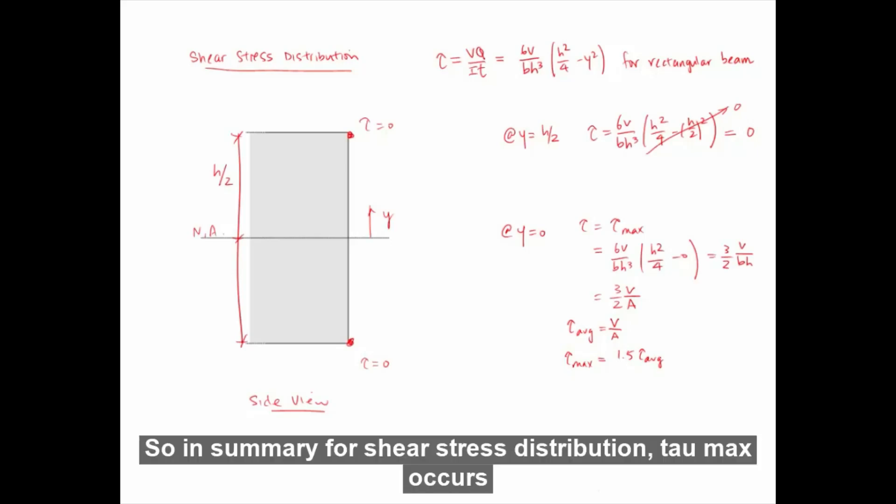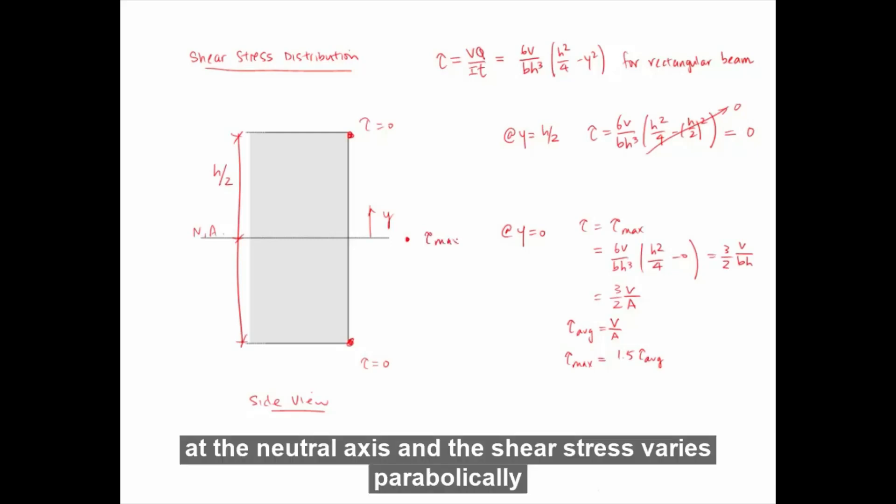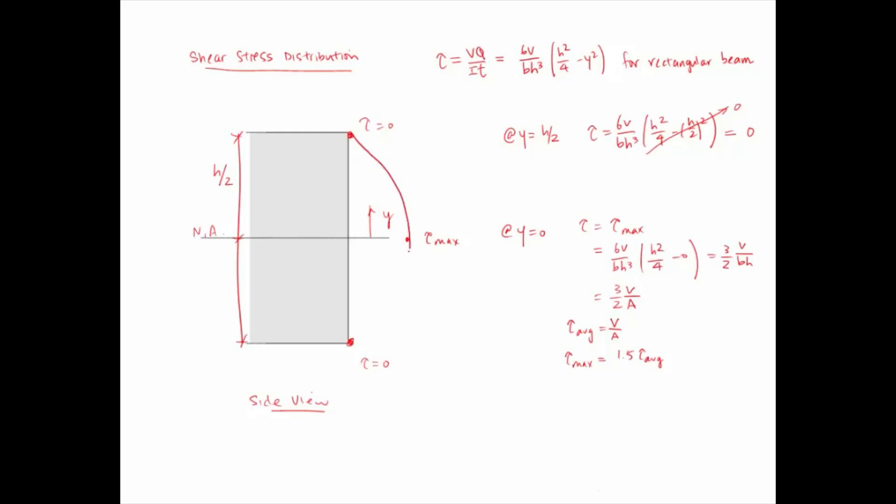So in summary, for shear stress distribution, τ max occurs at the neutral axis, and the shear stress varies parabolically over the rectangular section.